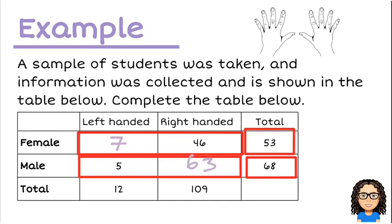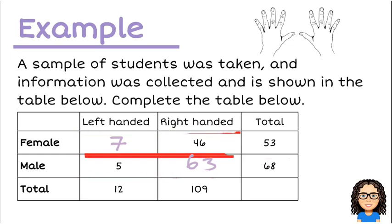Now, another way I could have done this was instead of looking across the rows and making them add up, I could have looked down the columns and made sure that the columns added up, because that is one of the rules with probability tables as well.